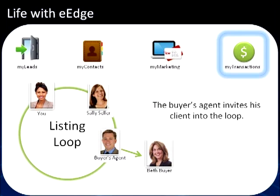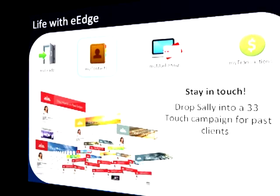Now guess what? We have a buyer. That buyer and buyer's agent can now be added to the listing loop so everyone in the transaction is involved. The best part is the opportunity for e-signatures and electronic signing. We can now send everything we need straight to the buyer's agent electronically, and the buyer's agent can send everything to their buyer to have everything electronically signed and sent right back — and no paper is being printed.